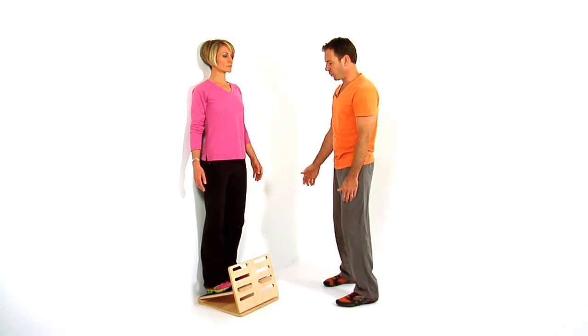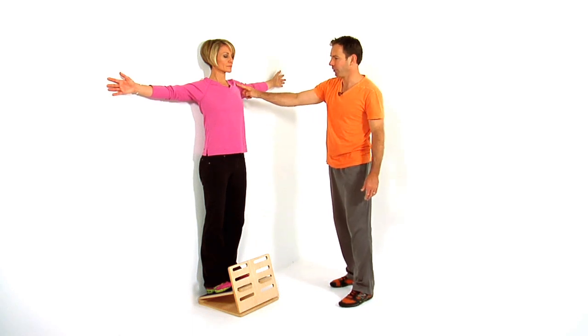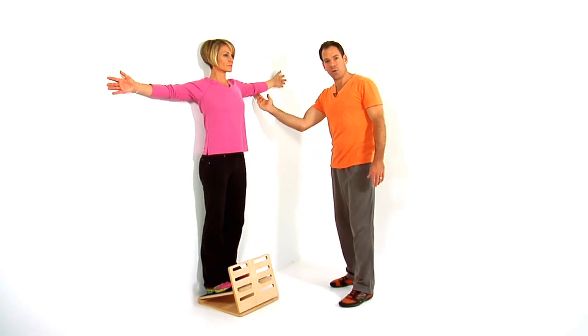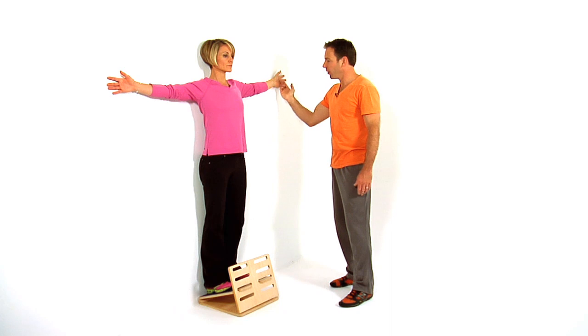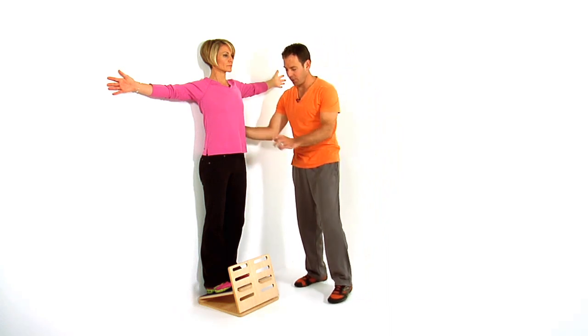So what we're going to do at this point is she's going to bring her arms up where her hands are level with her shoulder. Everybody stays against the wall, the back of the hand and the elbow, and she's going to hinge from her thoracic spine.